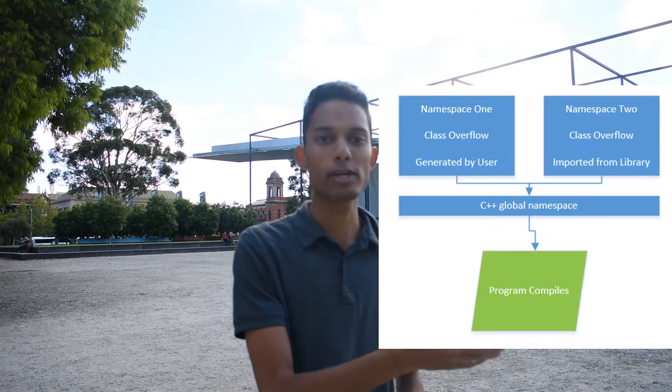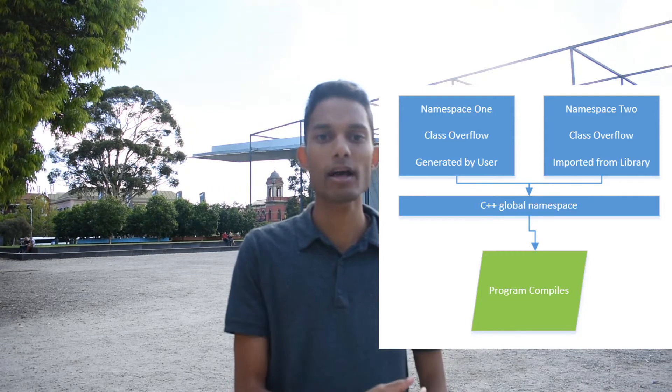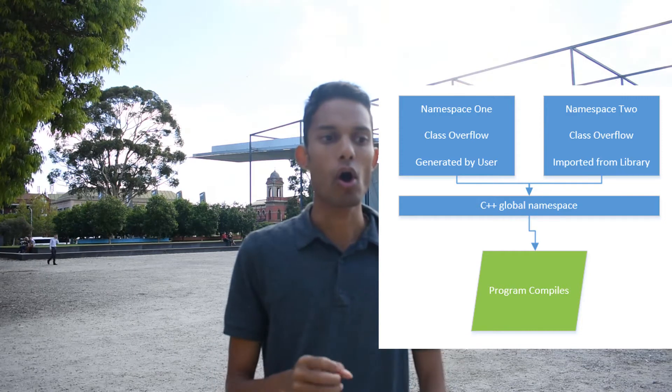So how can we solve this problem? The way we can solve this is by using namespaces. When we have separate namespaces with the same class name — say namespace 1 and namespace 2, as shown in the example below — we can use the same class name without any compiler issues, which we would have by not using namespaces.